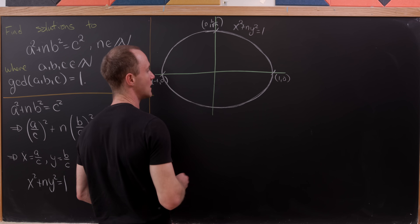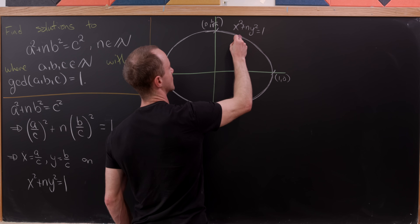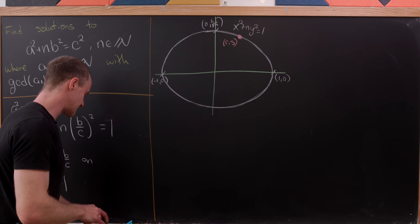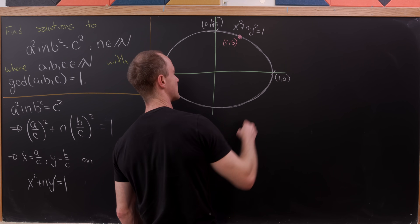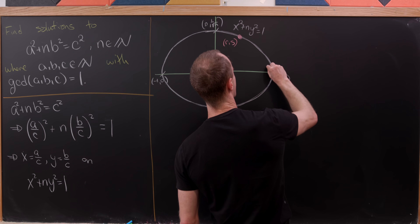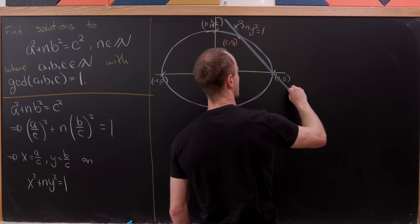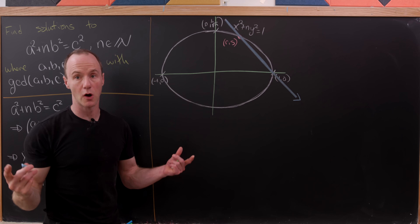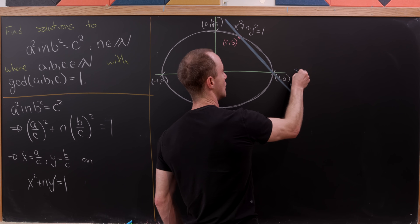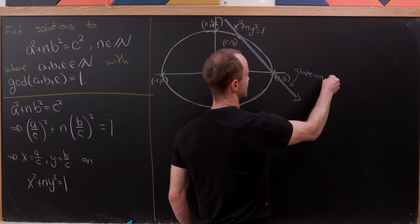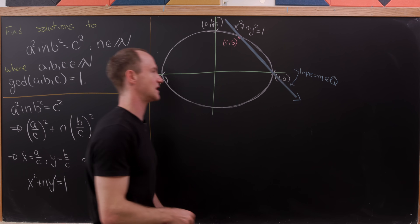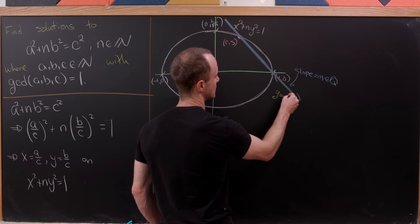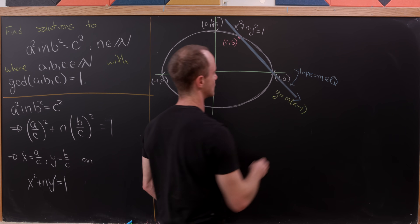Suppose we have a rational point on this curve with coordinates (r, s). We draw a line through the known point (1, 0) and this point (r, s). Since both points have rational coordinates, the slope m of that line is rational. The equation of the line is y = m(x − 1).